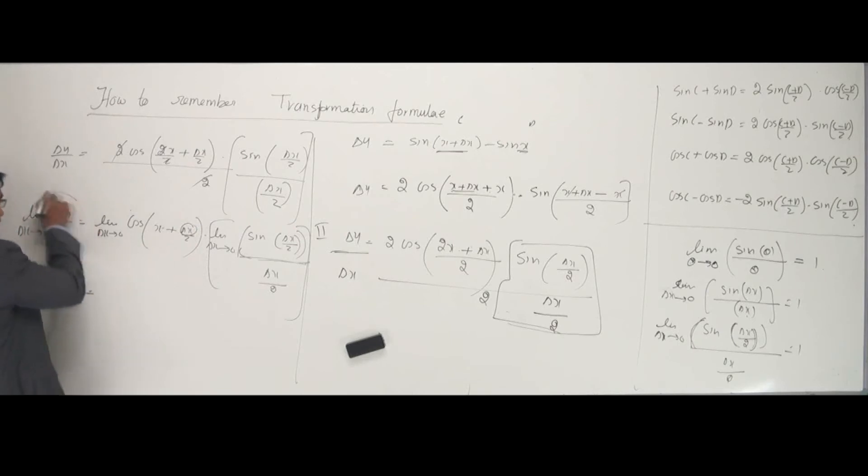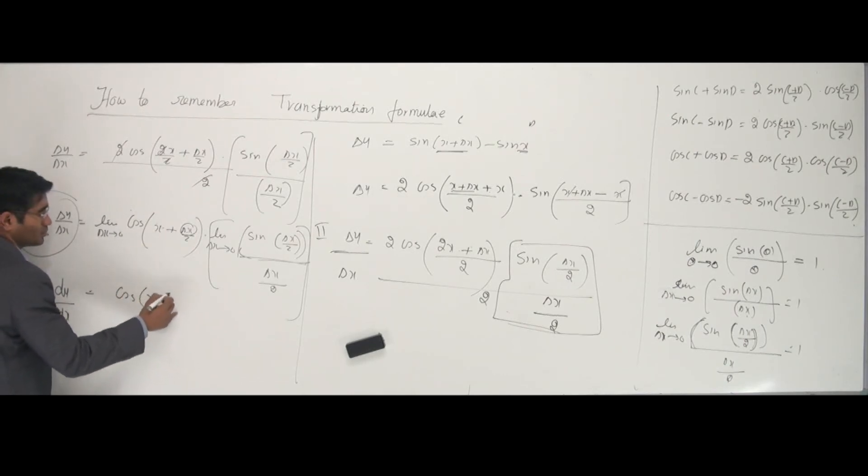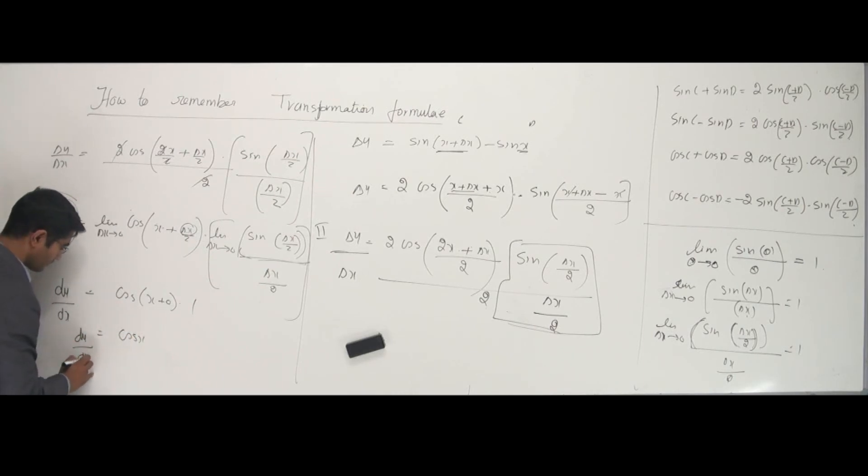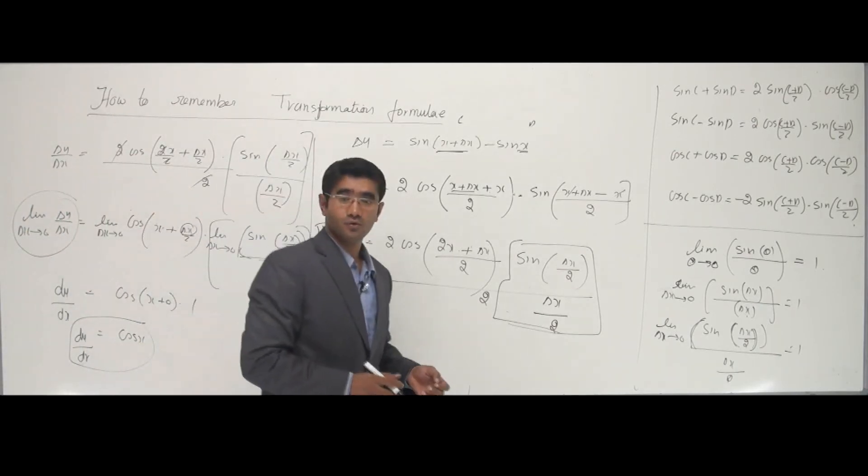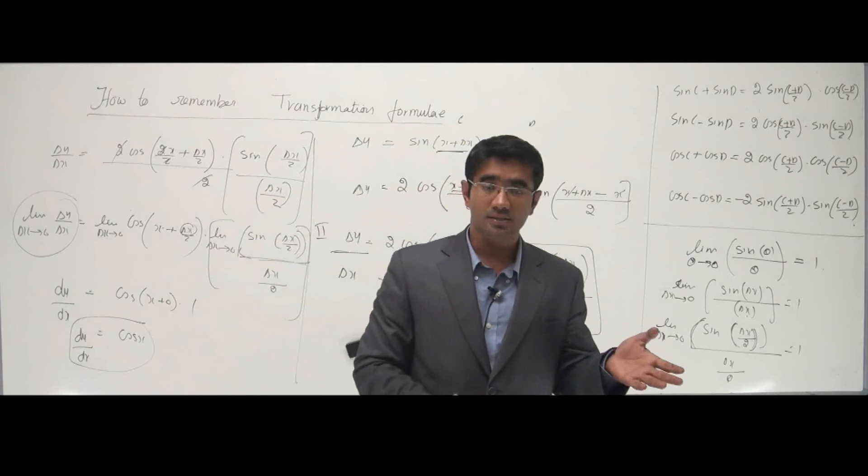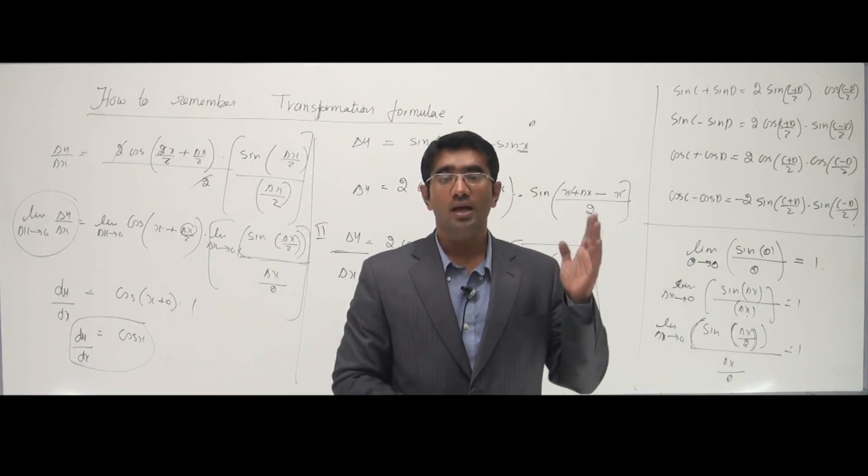This looks like dy by dx. You're done with this. Here, I put this 0. I'll get cos of x plus 0. And this whole thing becomes 1. So, what is the answer? Cos of x. That's dy by dx. Our differentiation of sine x is simply cos x. That's how we get the formula for the derivative of sine x using first principles.